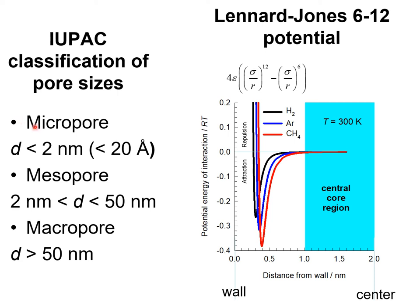Let us examine the IUPAC classification of pore sizes. A micropore has effective pore diameters smaller than 2 nanometers or 20 angstroms. A mesopore has pore dimensions in the range of 20 to 50 nanometers, and a macropore has pore sizes in excess of 50 nanometers.